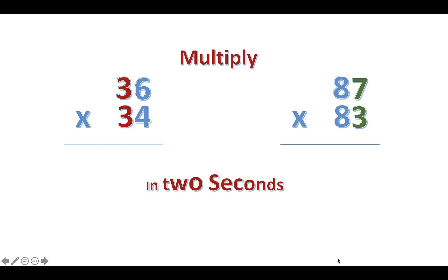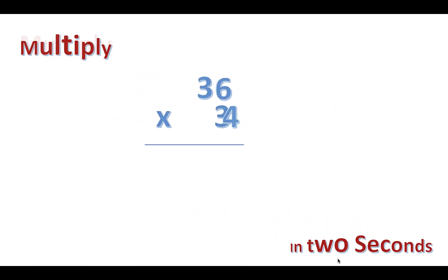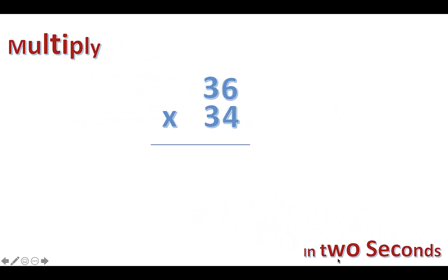Here we go. We have 36 times 34. The common digit is 3, which is the tens digit, and 6 and 4 add up to 10. The first step is to multiply 3 times the next digit after 3, which is 4. So 3 times 4 is 12.